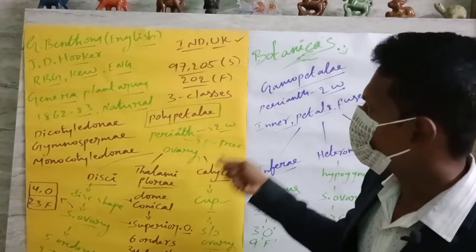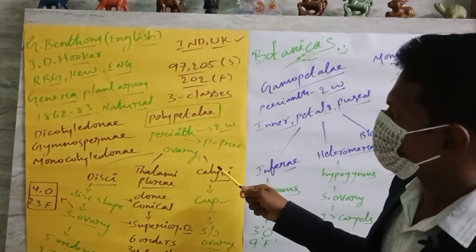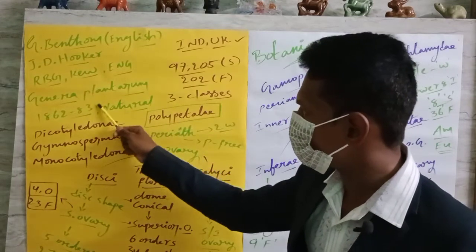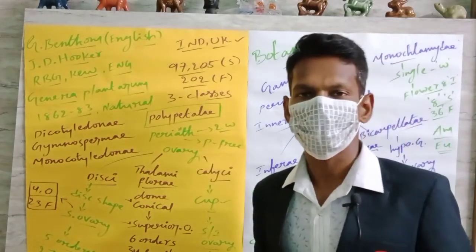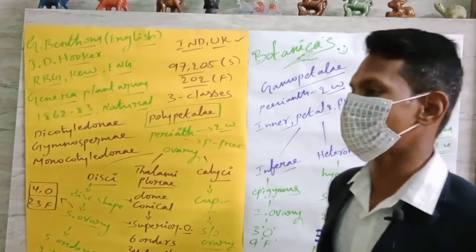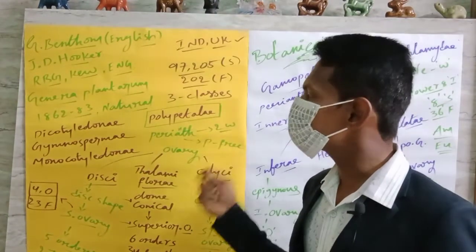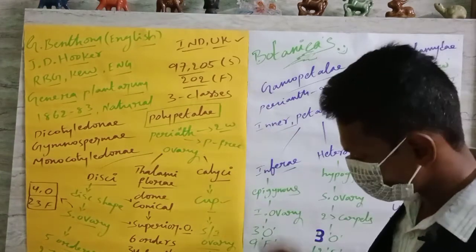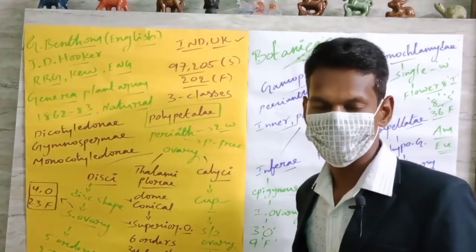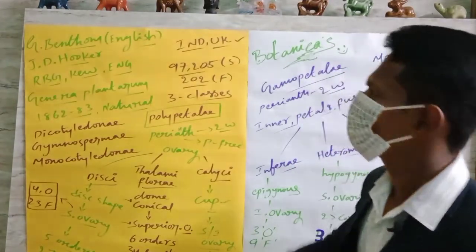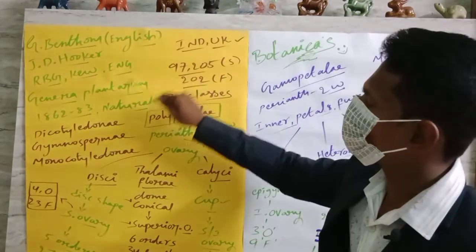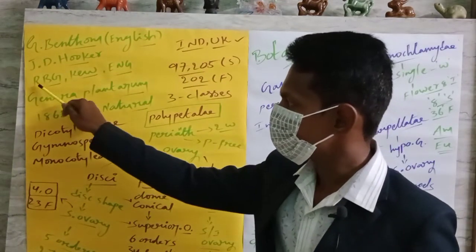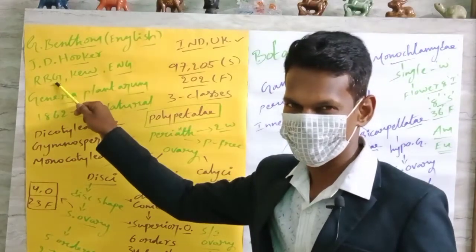They have given this classification, which is a natural system of classification. Based on morphological characters and features, they classified flowering plants under different categories — classes, series, orders, and families. Both scientists were Britishers who belonged to the Royal Botanical Garden.